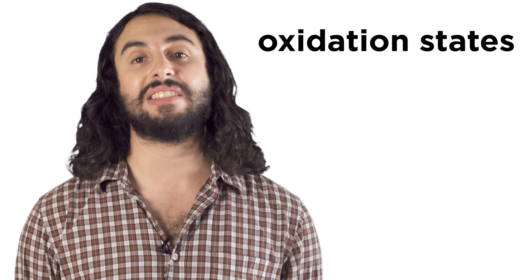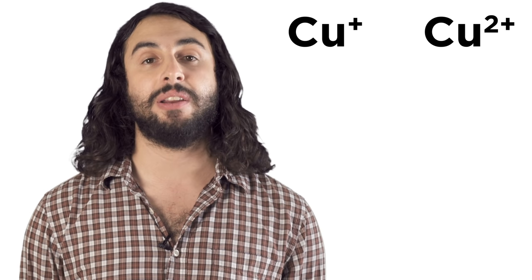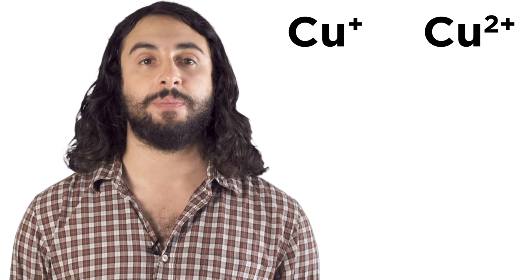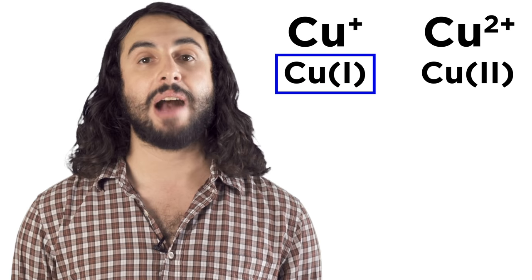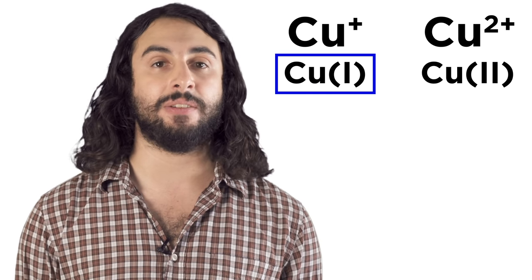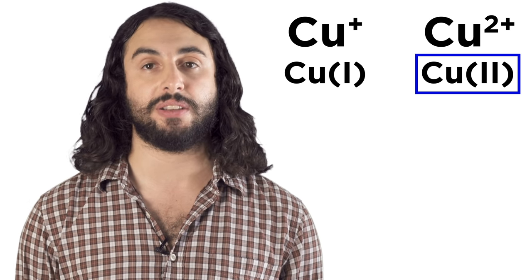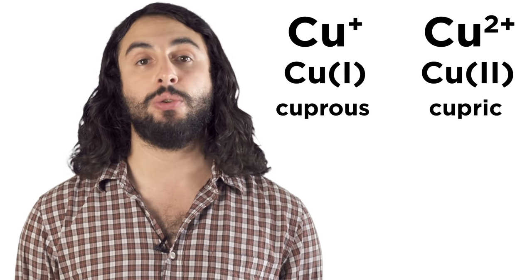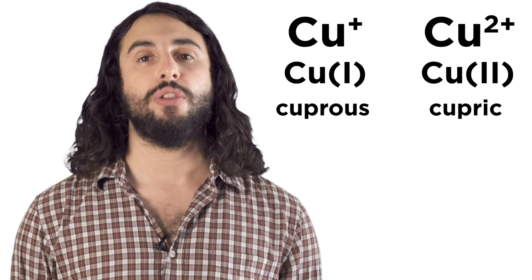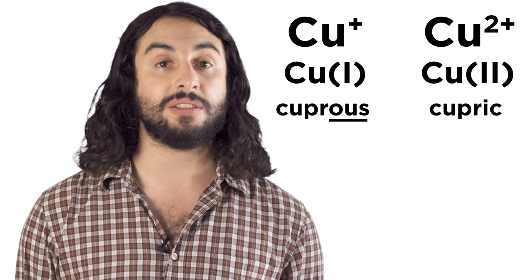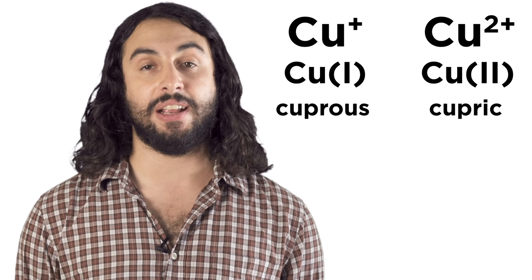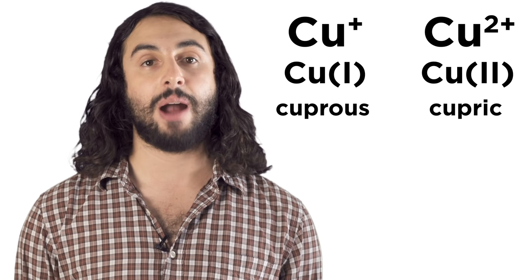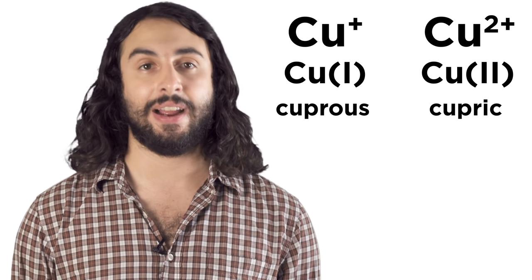Some metals can have different common charges or oxidation states. Copper can be one-plus or two-plus, and we represent that with Roman numerals in parentheses. Copper(I) means that it is a one-plus ion and copper(II) means two-plus. If there is an element with two common oxidation states, the lower one bears the suffix "-ous" and the higher will be "-ic". So a copper(I) ion is a cuprous ion and copper(II) is a cupric ion.